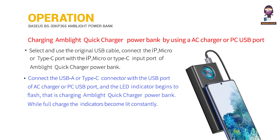Connect the USB-A or Type-C connector with the USB port of the AC charger or PC USB port, and the LED indicator begins to flash, indicating that the Amblite Quick Charger Power Bank is charging. When fully charged, the indicators become lit constantly.